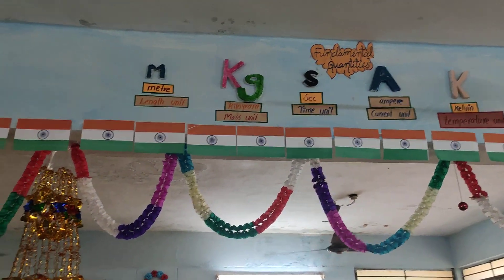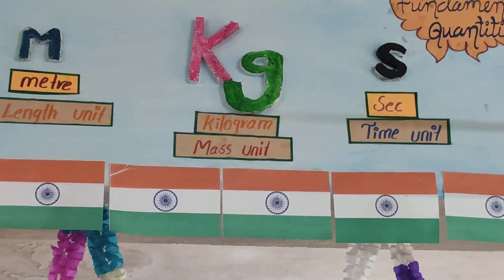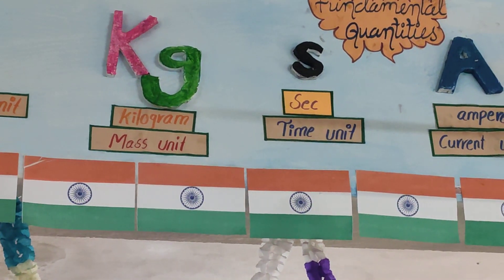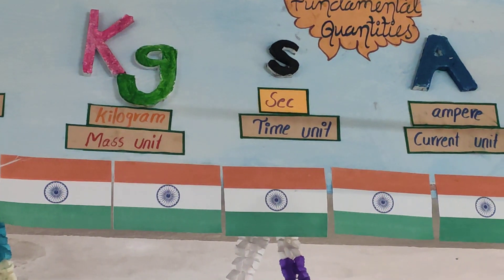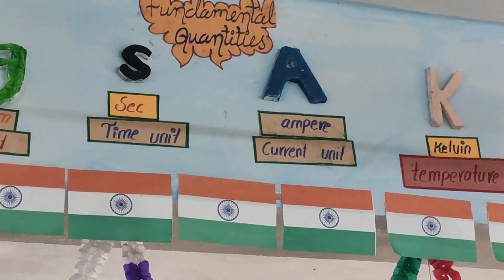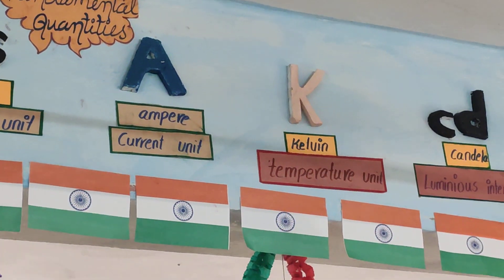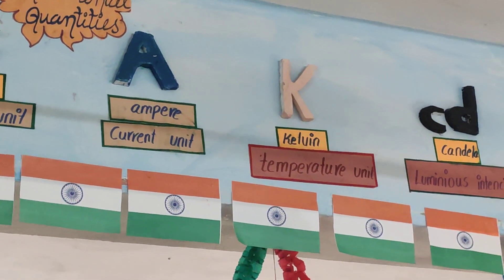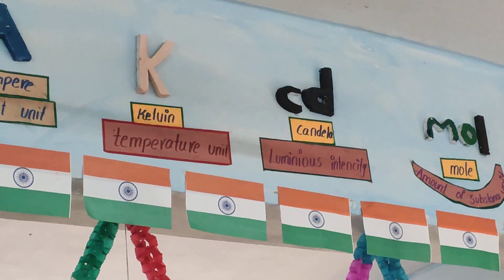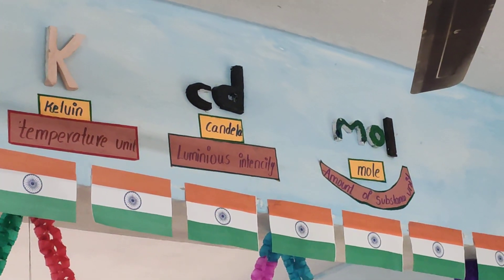This is physics fundamental quantities. First one: m is equal to meter, length is the unit. kg is equal to kilogram, mass is the unit. s is equal to second, time is the unit. A is equal to ampere, current is the unit. K is equal to kelvin, temperature is the unit.